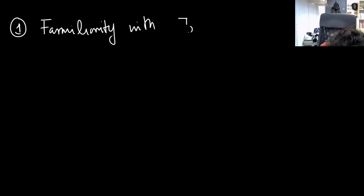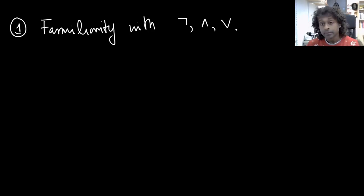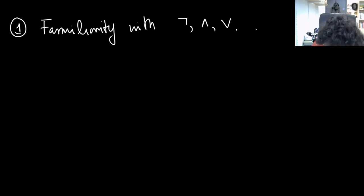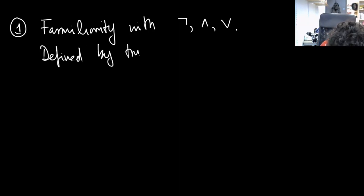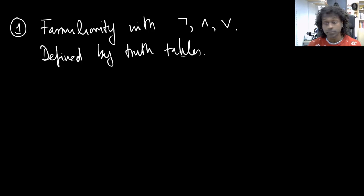The first thing I want to say — and this is something I'm going to assume familiarity with — is negation, conjunction, and disjunction. I hope that you're familiar with these three logical operations, which are defined by truth tables. There is no requirement here to use implication.